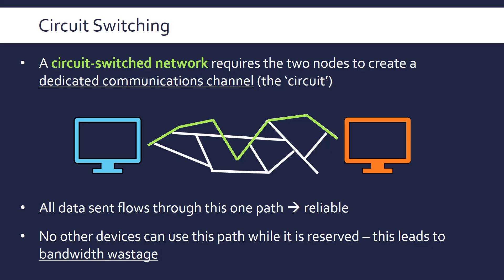The classic example of a circuit-switched network is old telephone connections, whereby you'd call someone on the landline and physical switches would connect you literally to the other person. That connection would be active for the duration of the call and then get released. But if there were no spare routes available — too many people using the network — you wouldn't be able to call the person because there's just no space. This is a significant limitation of circuit switching.